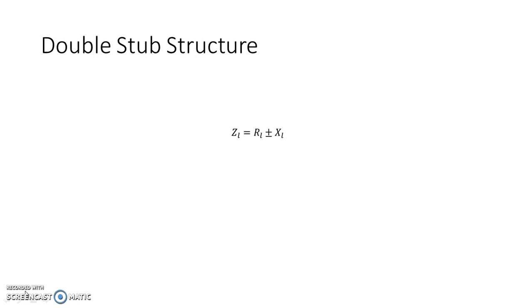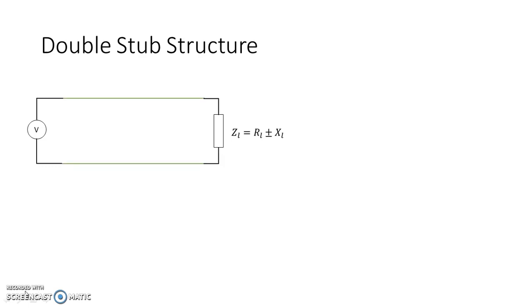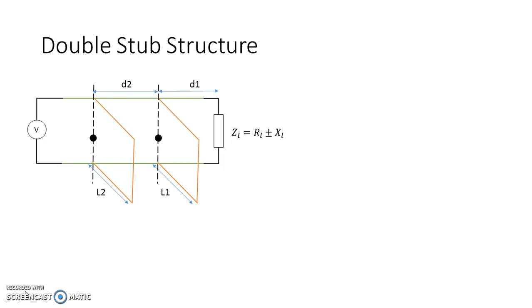Let us consider a load given as RL ± jXL which is to be connected to a source with impedance Z0 via a transmission line. The double stub structure has two stubs: the first stub with distance D1 and length L1, and the second stub with distance D2 and length L2. We will analyze the signal at two key points — the interface of the first stub, called Y11, and the interface of the second stub, called Y22.